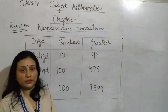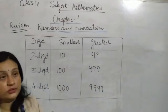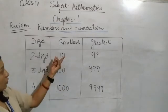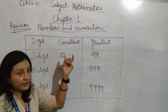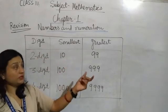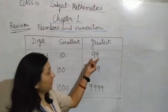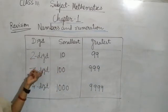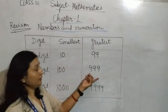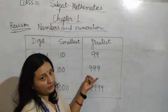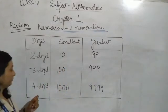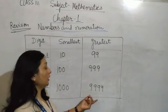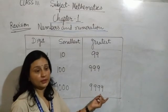In the exercise, write the smallest 2-digit number, which is 10. Write the greatest 2-digit number, which is 99. Write the smallest 3-digit number, which is 100. The greatest 3-digit number is 999. For 4-digit numbers, the smallest is 1,000 and the greatest is 9,999.